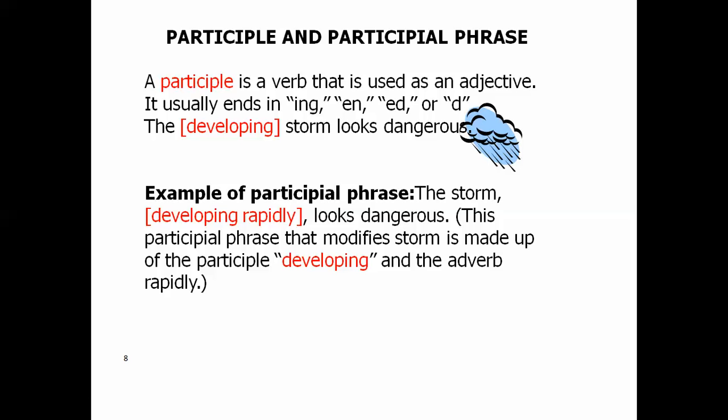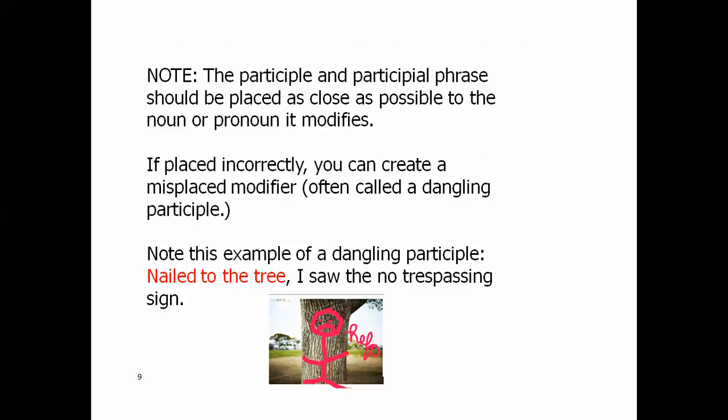Now here's an example of a participial phrase. The storm, developing rapidly, looks dangerous. This participial phrase that modifies storm is made up of the participle, developing, and the adverb rapidly. Notice that the participle and the participial phrase should be placed as close as possible to the noun or pronoun that it modifies.